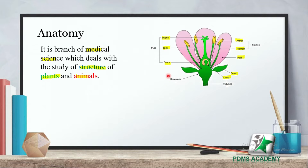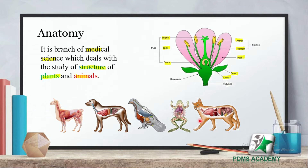This is basically the anatomy of a flower. In the same way, animals have different structures such as the stomach, small intestine, and other structures such as hands and feet. These structures which are made by an organism — if we study these structures, we call it anatomy.